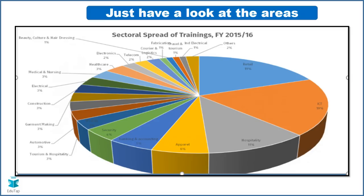Have a look at this pie chart — don't worry about the data as it is from financial year 2015-16 and questions won't be based on it. It is just to give you an idea of the vast number of areas covered: beauty, culture and hairdressing, electronics, healthcare, travel and tourism, construction, garment making, banking and accounting, security, apparels, hospitality — a huge range of skill-based training areas.